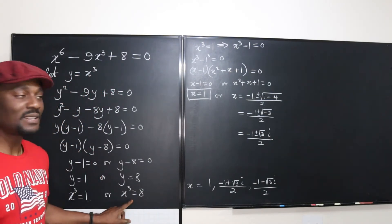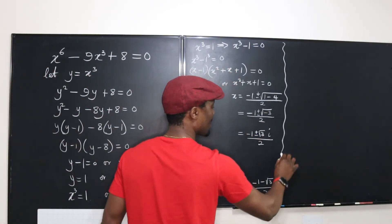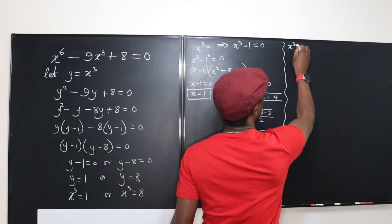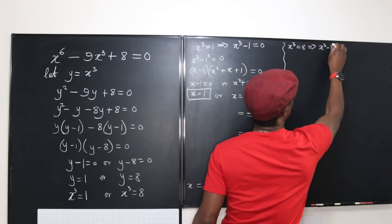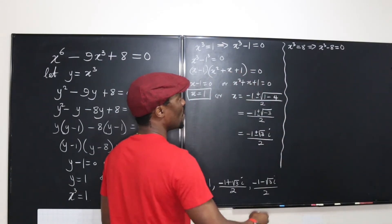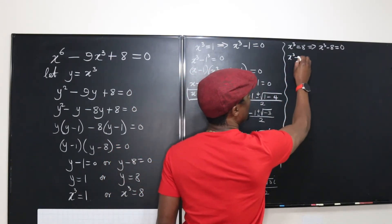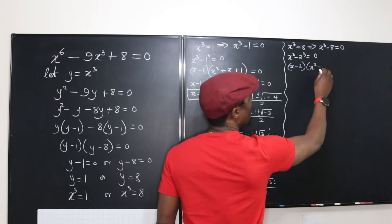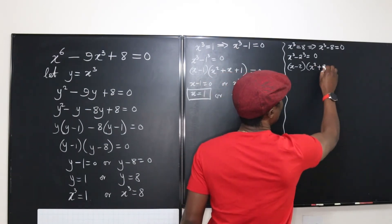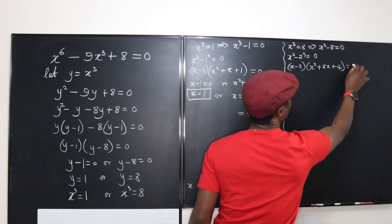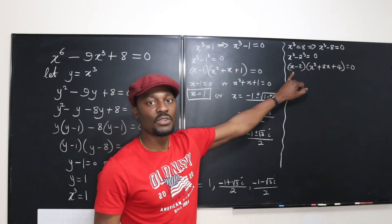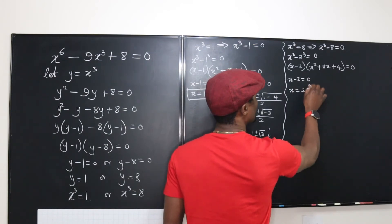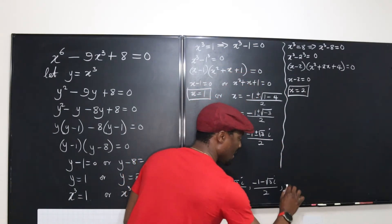So from the x cubed equals 1 case, we have three solutions: x equals 1, x equals (negative 1 plus square root of 3 i) over 2, or x equals (negative 1 minus square root of 3 i) over 2. Now we apply the same rule to the other side. x cubed equals 8 implies x cubed minus 8 equals zero, which we write as x cubed minus 2 cubed equals zero. Factoring: (x minus 2) times (x squared plus 2x plus 4) equals zero. So x minus 2 equals zero gives x equals 2.